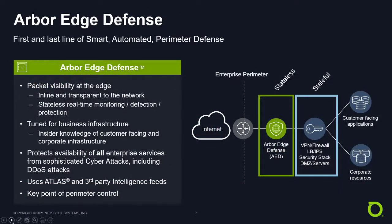One such dedicated device is NetScout's Arbor Edge Defense. Arbor Edge Defense is a stateless packet processing device. It sits in front of stateful devices like firewalls, load balancers, and VPN concentrators, and protects those devices from DDoS attacks — namely state exhaustion attacks, but also volumetric attacks up to the size of the internet circuit, application layer attacks, and more.